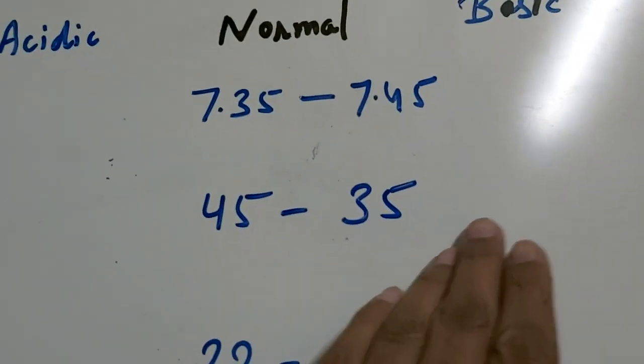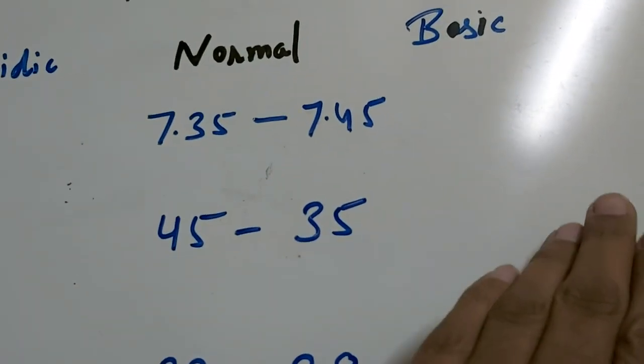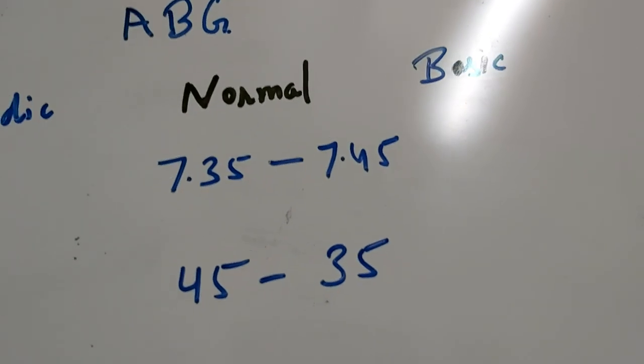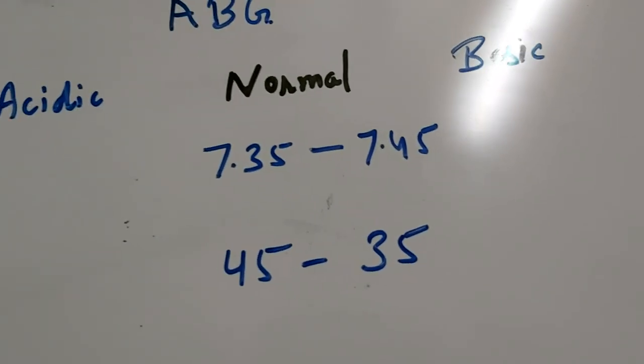And if it is less than 35, the condition will be basic, that is alkalosis, and it will be respiratory alkalosis.